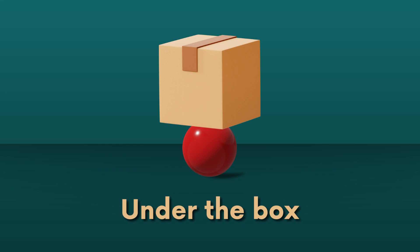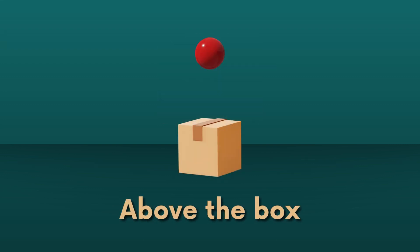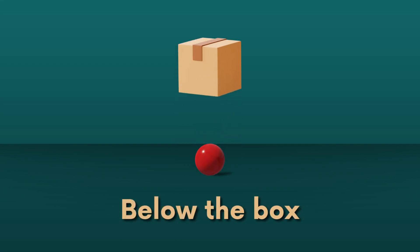The preposition 'above' refers to an object's location at a higher position relative to another object. For example, 'the ball is above the box' means that the position of the ball is above or higher than the position of the box. The preposition 'below' indicates that an object is situated at a lower position relative to another object. For example, 'the ball is below the box' means that the position of the ball is lower than the position of the box.